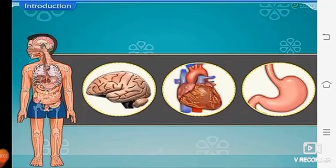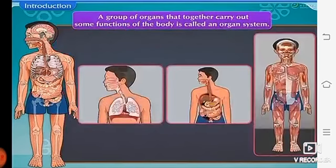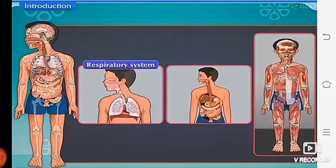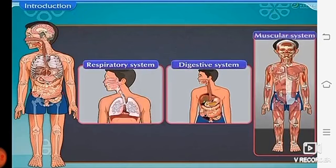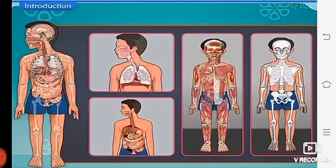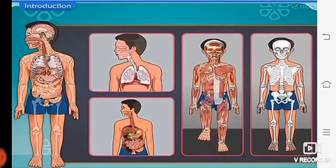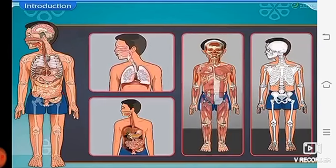Students, we all know that there are various important organs present inside our body. A group of organs that together carry out some functions of the body is called an organ system. Respiratory system, digestive system, and muscular system are some of the organ systems present inside our body. Like these, the framework of our bones also forms an organ system. All these organ systems continuously carry out various body functions. So now let us learn about the framework of our bones as an organ system in this lesson.